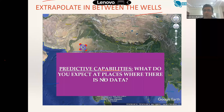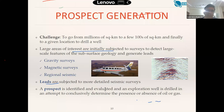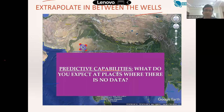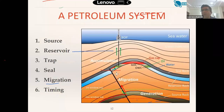If you go for interviews to ONGC or Oil India, knowing all these ingredients is very important. Usually people forget timing - they tell the first five ingredients. If you mention timing in interviews, they will be very happy. This understanding of prospect generation and how you narrow down your areas of interest is very important for interviews at any of these oil companies.